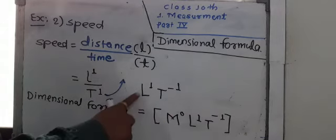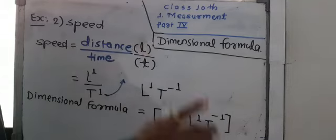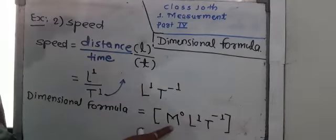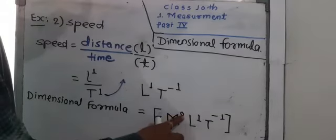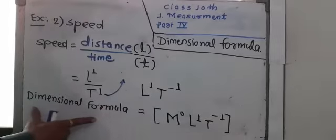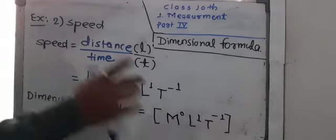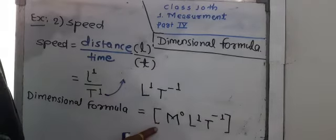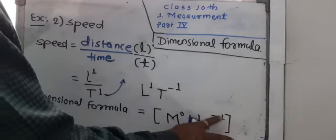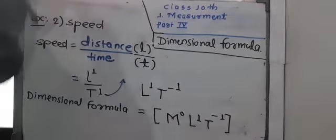Therefore, we can mention L raised to 1, T raised to minus 1. But to measure speed, there is no need for mass, thus we mention it as 0. Therefore, combinedly, the dimensional formula for speed is, in square brackets, M raised to 0, L raised to 1, T raised to minus 1. Like this, you can write the dimensional formula for various physical quantities.